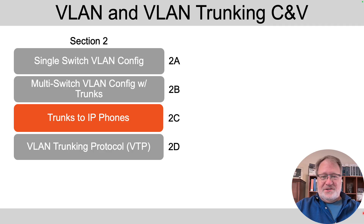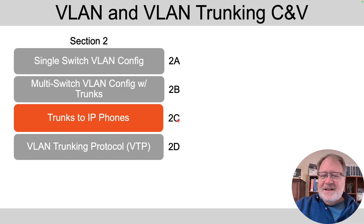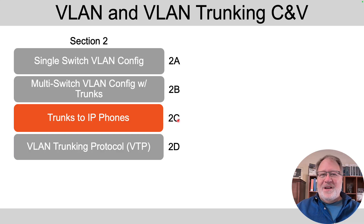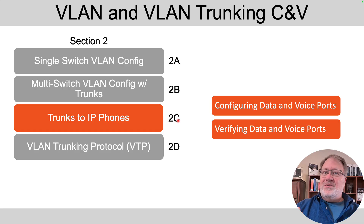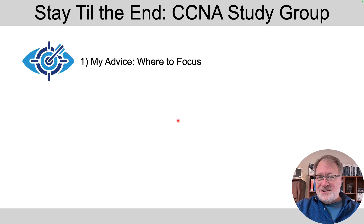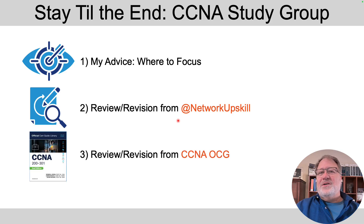These videos at the channel match the organization of the books. There's a section on VLAN and VLAN trunking configuration and verification, and it's broken down into four separate videos here at the YouTube channel. We're on the third one, labeled 2C, titled 'Trunks to IP Phones.' We'll talk about how to configure it and then how to verify it. The verification is the part that can really be confusing about whether it's a trunk or an access port. Stay to the end for study group comments, review and revision tips from the channel and the books.